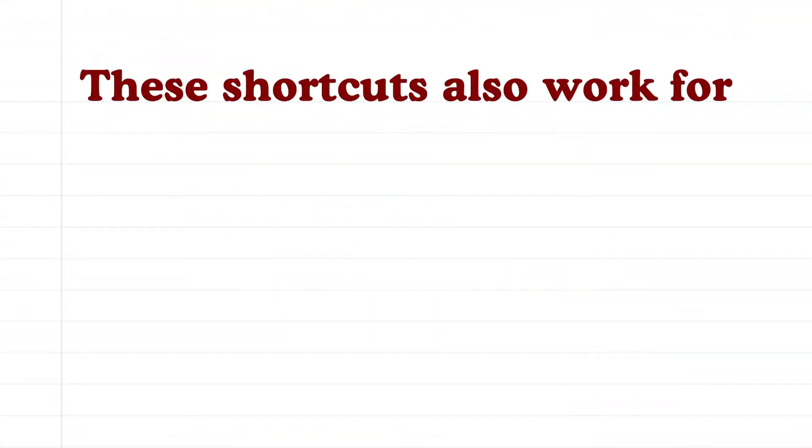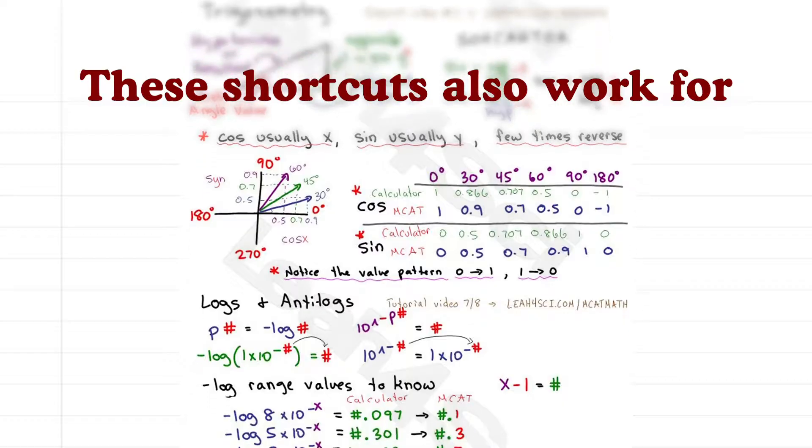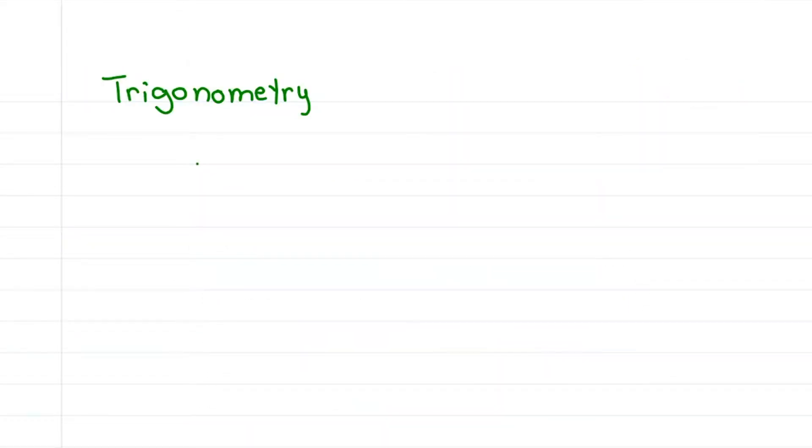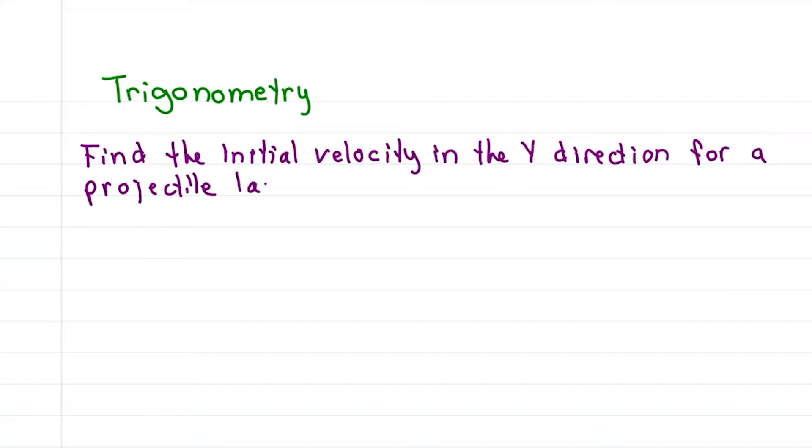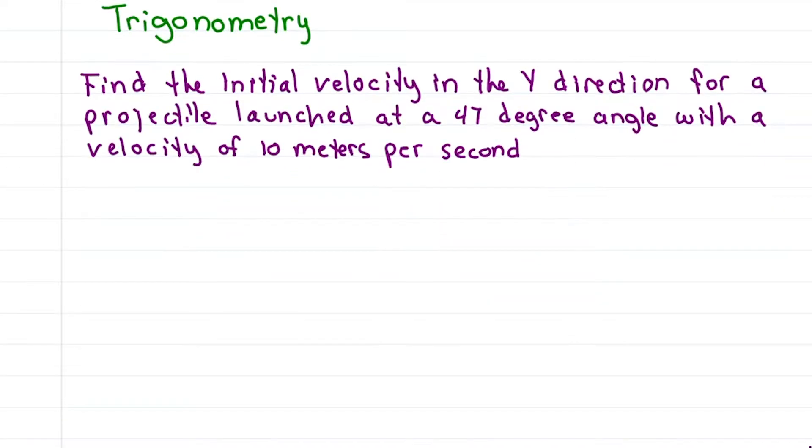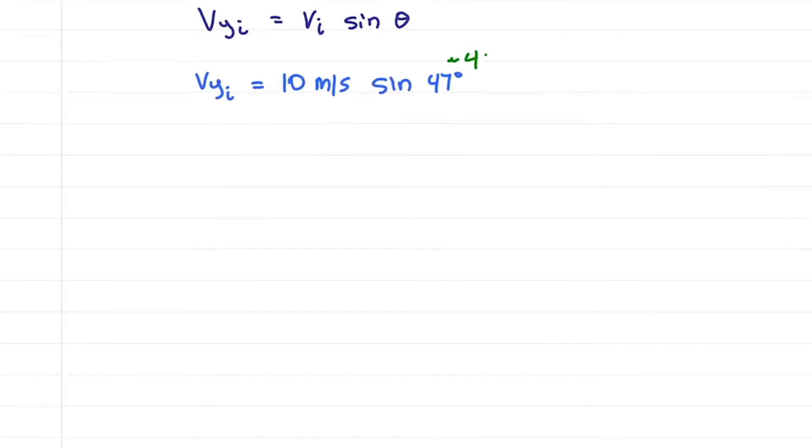These shortcuts and simplification work even for impossibly scary math like trigonometry and logarithms. For example, find the initial velocity in the y direction for a projectile launched at a 47 degree angle with a velocity of 10 meters per second. I show you how to solve this in my kinematics video where vy initial is equal to v initial sine theta giving me vy initial is equal to 10 sine 47 degrees.